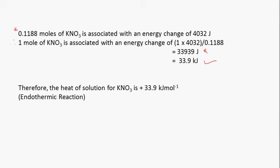We said that the reaction was endothermic because the reaction mixture absorbed energy from the surroundings — there was a temperature drop. For an endothermic reaction we put a positive sign in front of our answer. So the heat of solution for potassium nitrate is positive 33.9 kilojoules per mole.